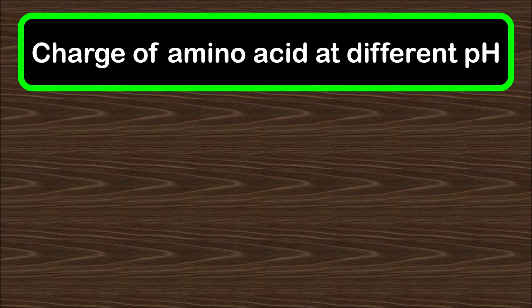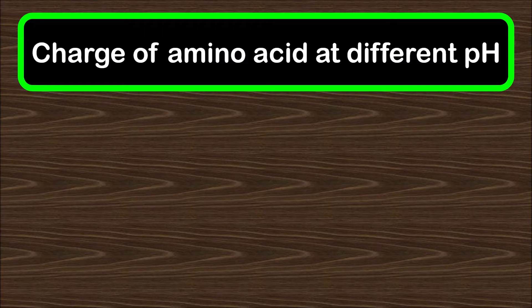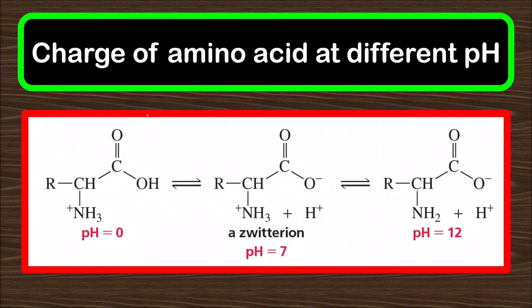Hello everyone. Welcome to Chemezon Complete Chemistry. In today's video we are going to learn a very important topic on how to assign charge, or calculating the overall charge of an amino acid at different pH — a very acidic pH like pH equal to 1 or 2, some mid-level pH at 6 or 7, which is called physiological pH at 7.35, or very high pH around 11 or 12.